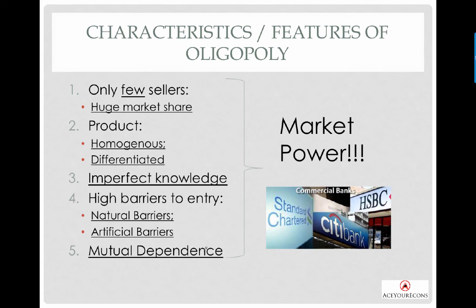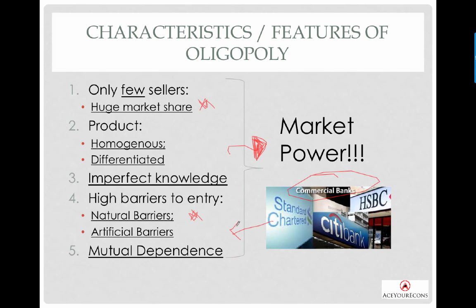With high barriers to entry and few buyers and sellers, this all points to significant market share and market power. A good example is commercial banks — they have very high barriers to entry, as a government license is required to operate. You need approval from the central bank to operate a full-license commercial bank in any country. With that, let's take a quick break and when we return we'll look at the competitive model and the calculation of market share.